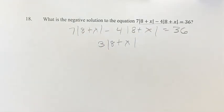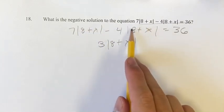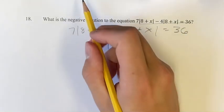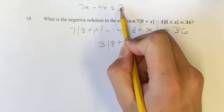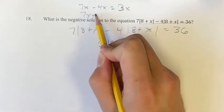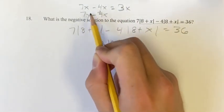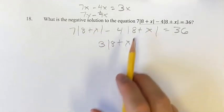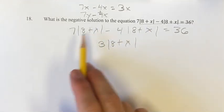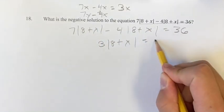Just remember if you're doing this, the thing inside the absolute value has to be the same. So you can do 7x minus 4x is equal to 3x. You cannot do 7y minus 4x because they're not the same. Same sort of thing here. These have to be the same and then you can subtract them. This is still equal to 36.